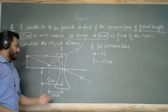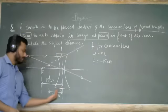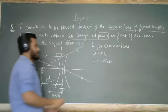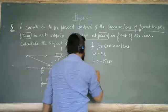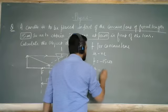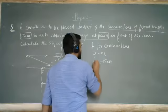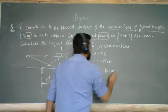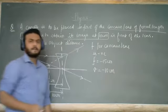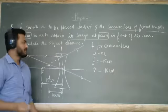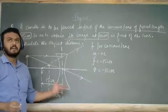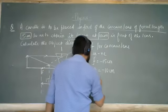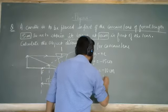Similarly, the image is 10 cm in front of the lens, so the image distance v is equal to minus 10 cm. The object distance u is what we need to find — it is unknown, represented by a question mark.